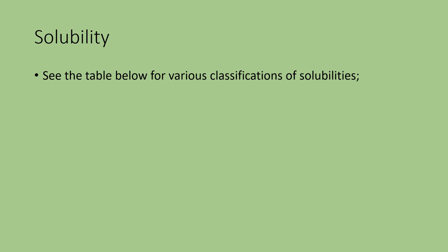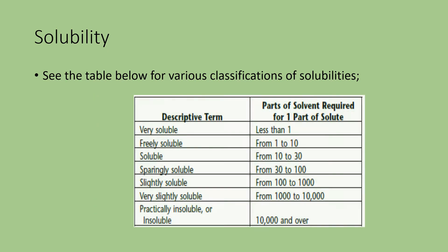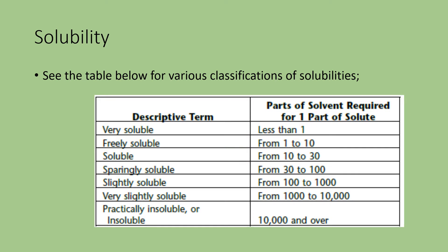Let us see how the solubility matrix is defined in descriptive terms. There is a descriptive term for various classifications of solubility and parts of solvent required for one part of solute. Here, solute means it is a compendial article, and part means either weight or volume. For the very soluble category, when you take one part of solute and it dissolves in less than one part of solvent and the solution is clear, this category is considered as very soluble.